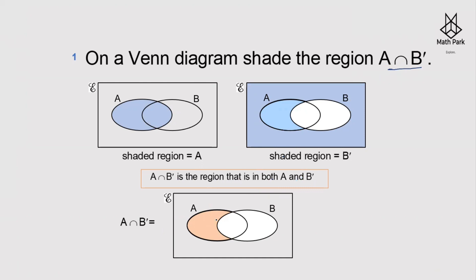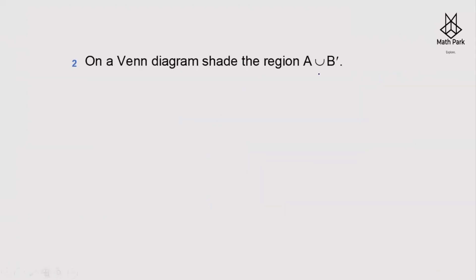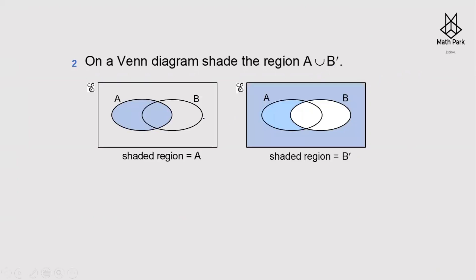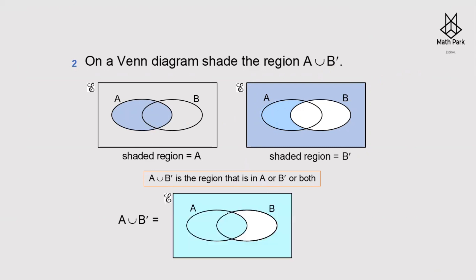On a Venn diagram, shade the region A∪B'. B complement is all that is not in B. A∪B' is the region that is in A or B complement or both — everything of A is included, plus everything outside B. The shaded region shows A∪B'.